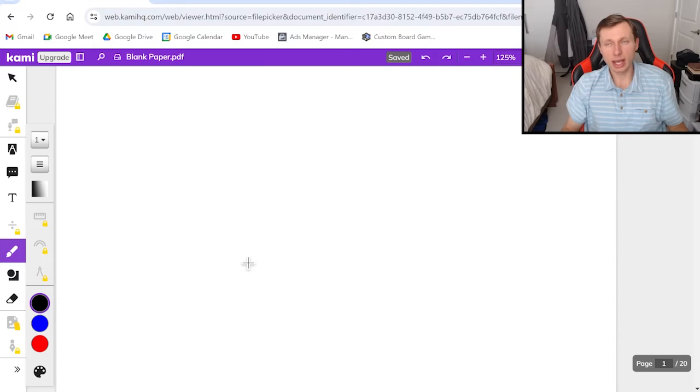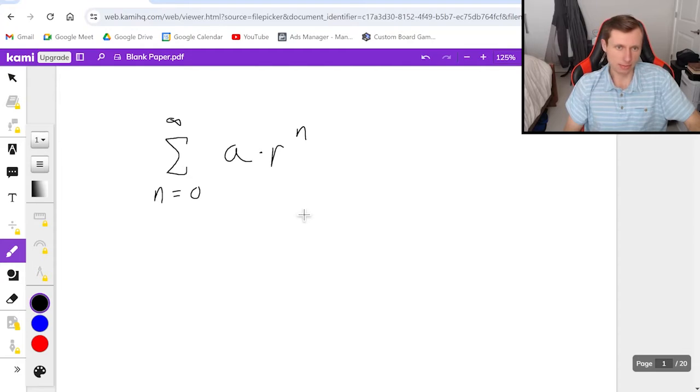So let's get started by looking at what form geometric series are always in. Geometric series will always be in the form n equals zero to infinity. And this is the only type of series I believe where the starting point really matters. n equals zero to infinity. And the form is a times r to the nth power. What I want you to pay attention to is the a and the r are things that we're going to be solving for. But there's only n showing up in the exponent. There's no n in the base or anywhere else.